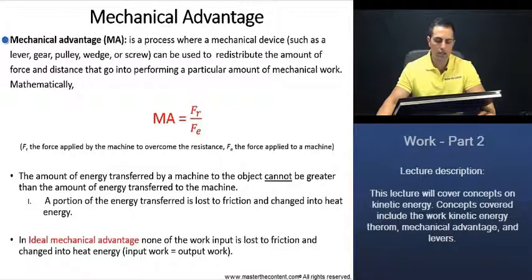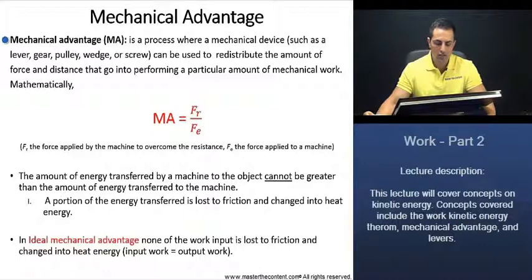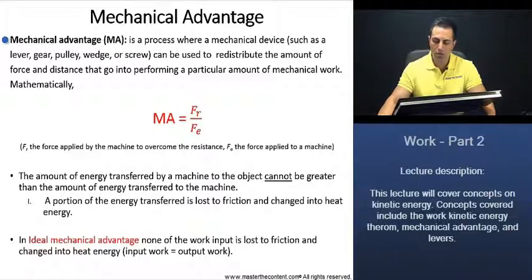Mechanical advantage. Let's begin here with a definition. Mechanical advantage is a process where a mechanical device such as a lever, gear, pulley, wedge, or screw can be used to redistribute the amount of force and distance that go into performing a particular amount of mechanical work.